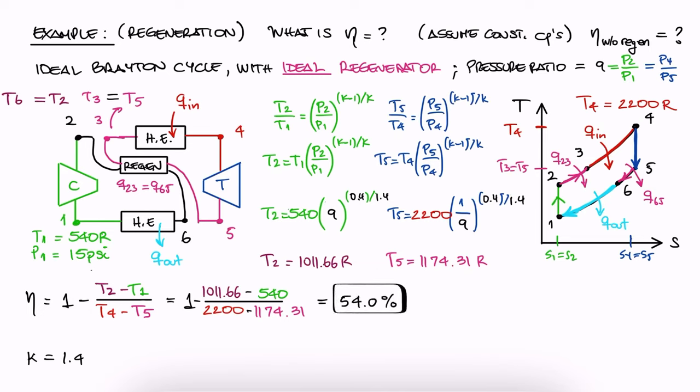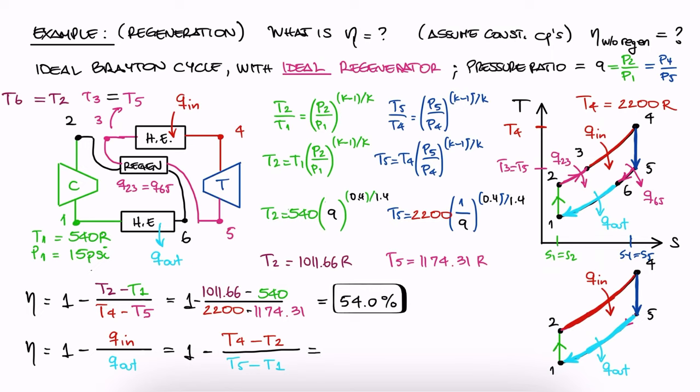If we now try to see what the efficiency would be without the regenerator, meaning that there is no state 3 nor 6, Q out would be T5 minus T1, and Q in would be T4 minus T2. The temperature values themselves wouldn't have changed, so we just substitute the values, and we get the efficiency without the regenerator. In this specific case, the difference between efficiency values is not much, but it's still an improvement that required no additional external input, so it's still a win.